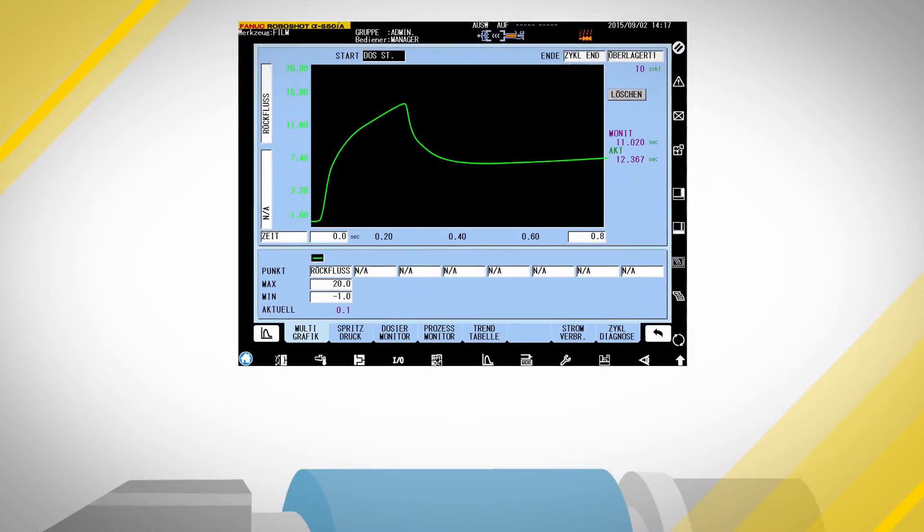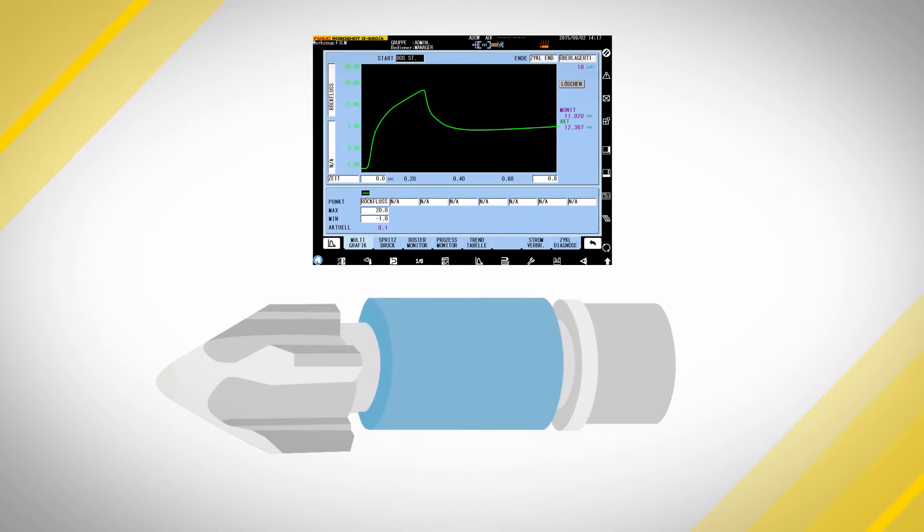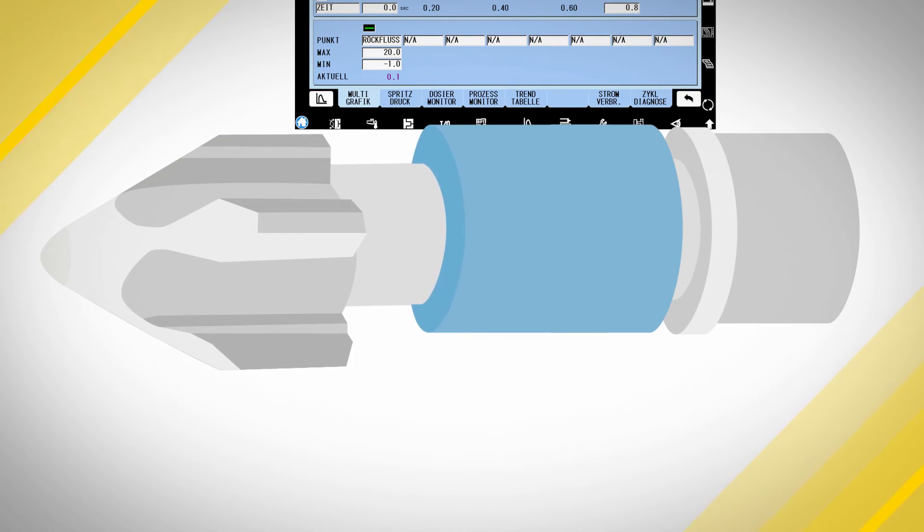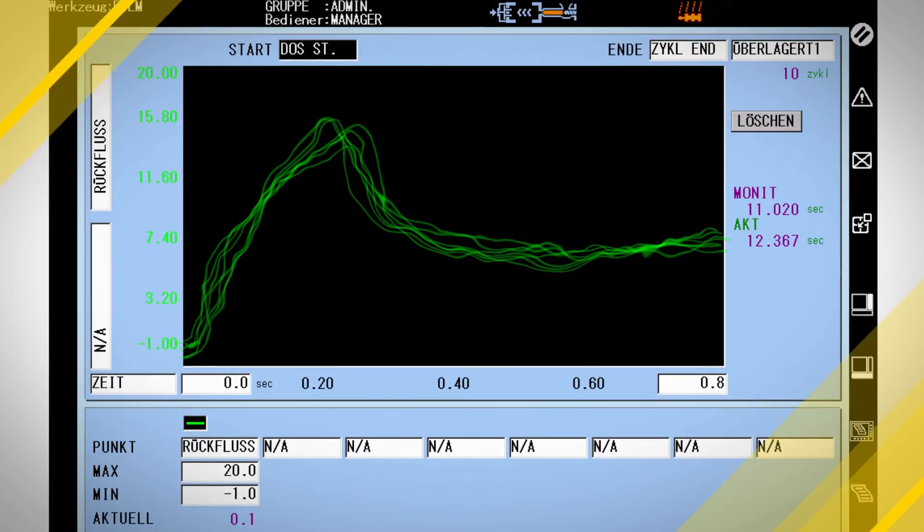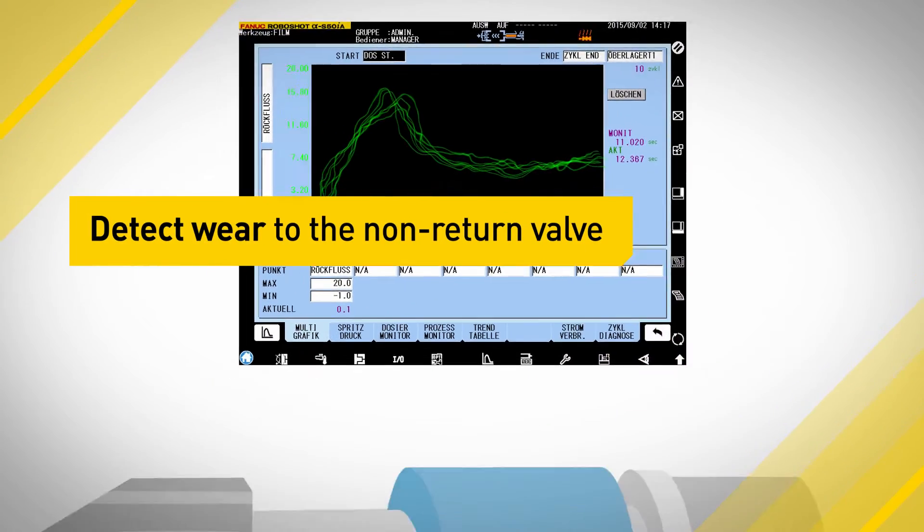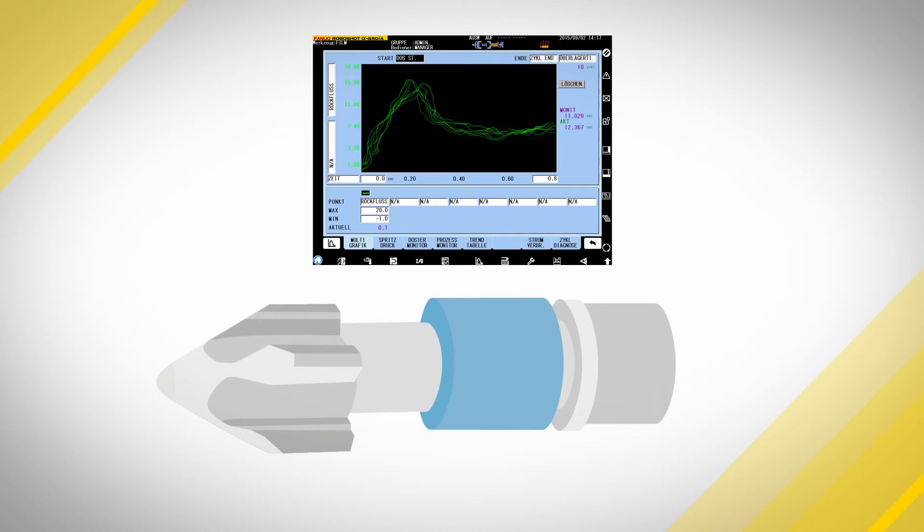This allows you to see the effect of process condition changes against the behavior of the check valve. It even helps identify the onset of valve wear without needing to disassemble the barrel assembly. Detect wear to the non-return valve before bad parts are produced.